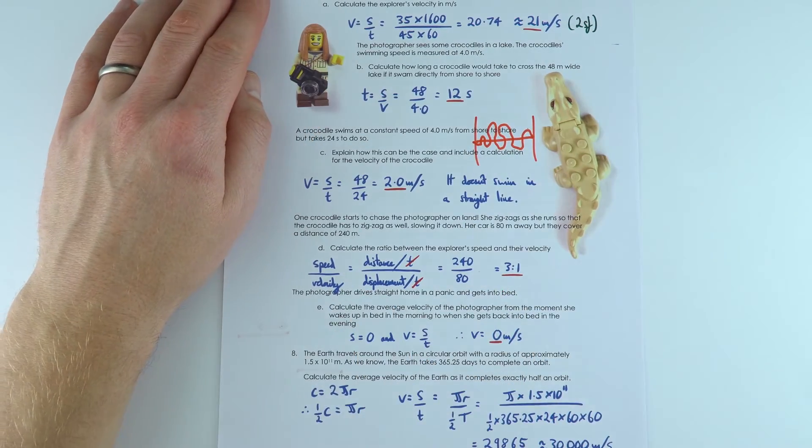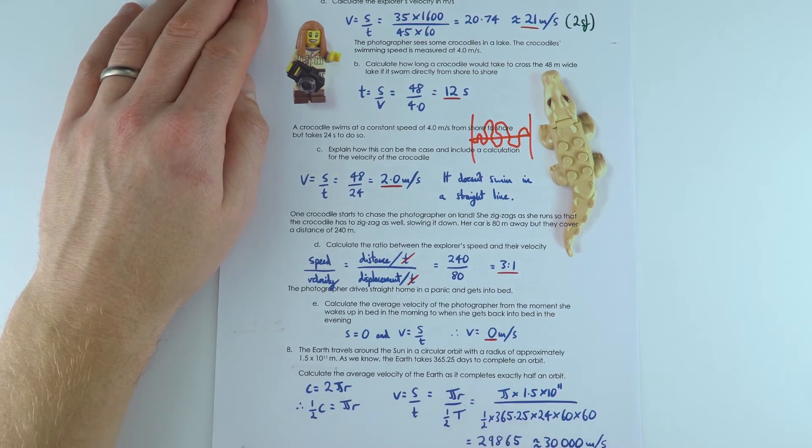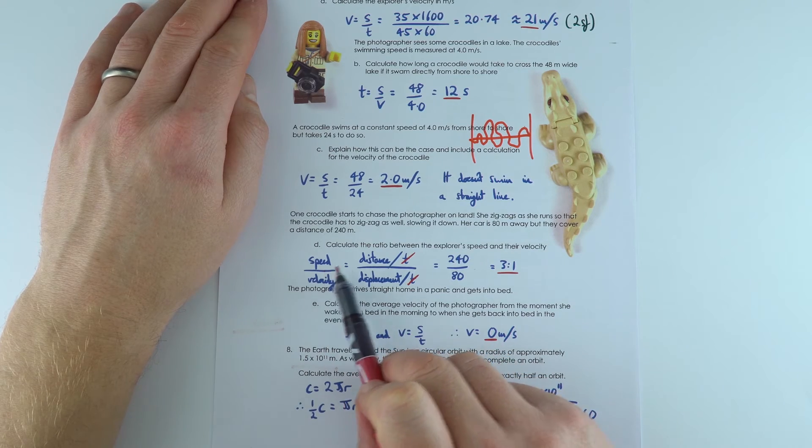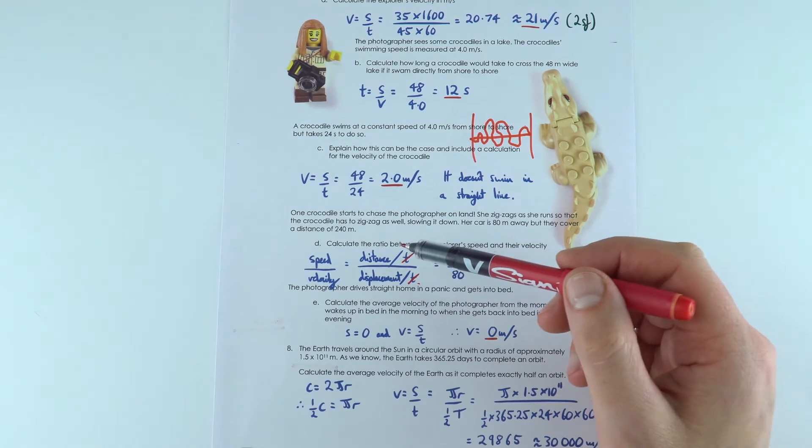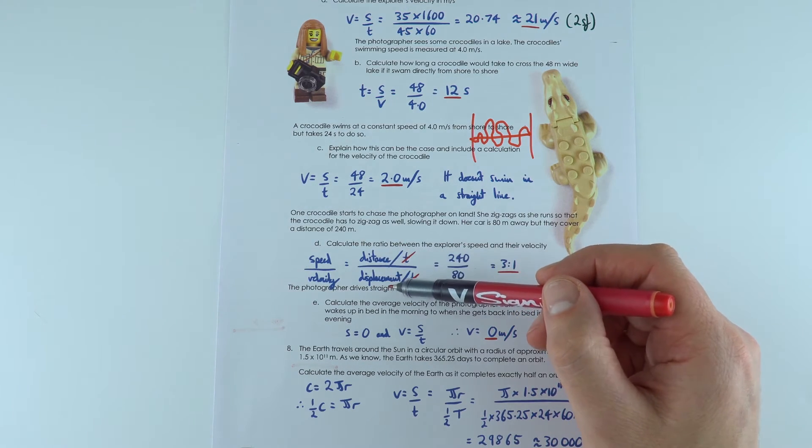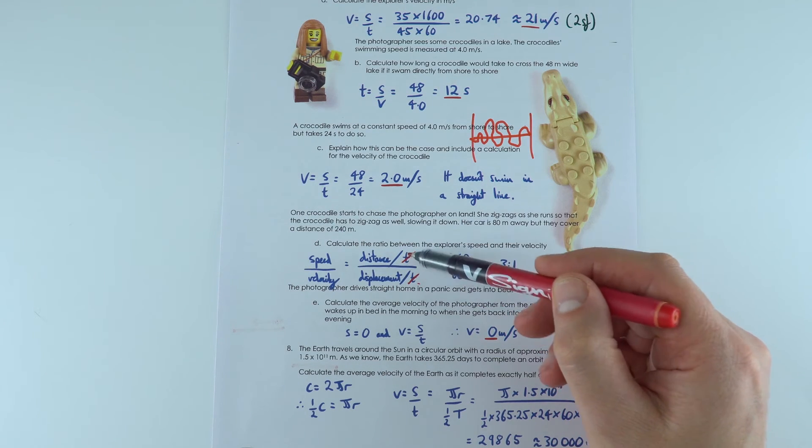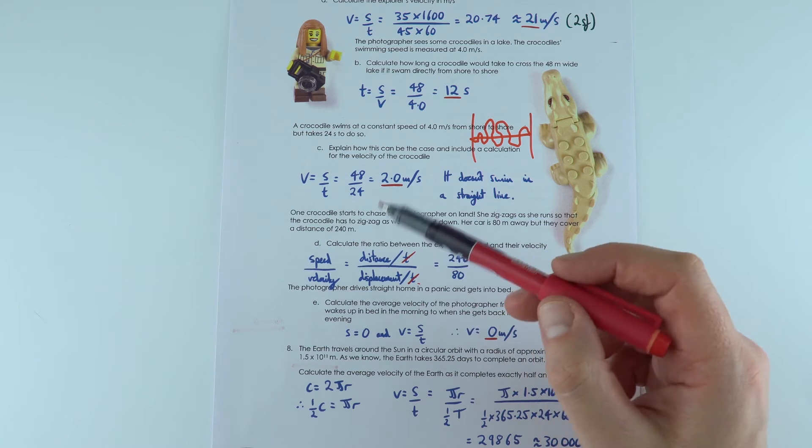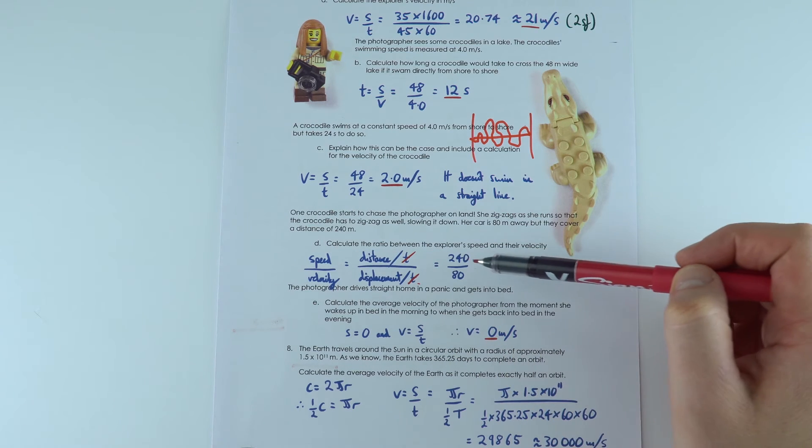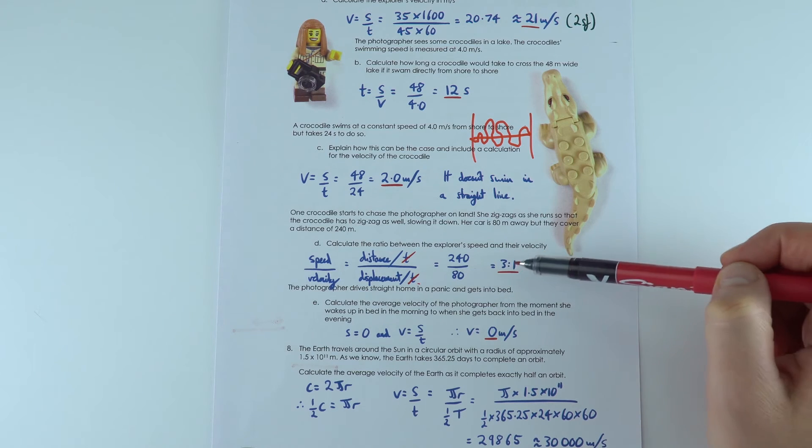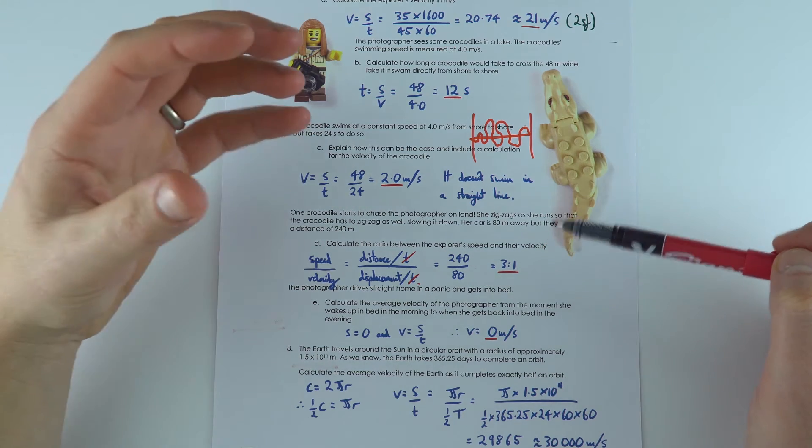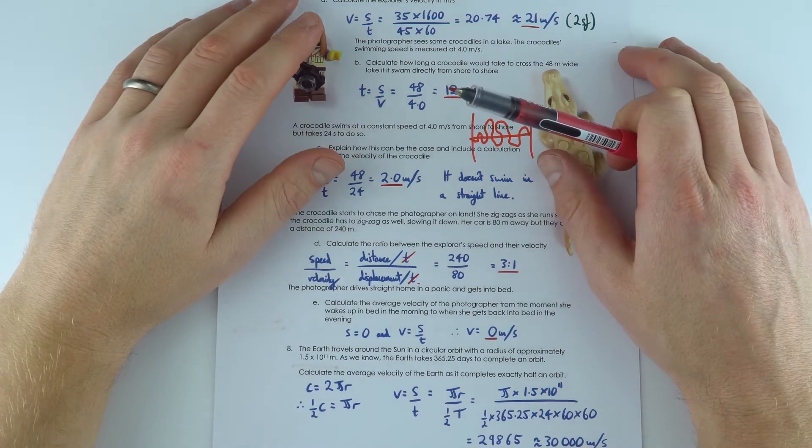Also confusing is this one here about ratios. So the ratio of speeds, because speed is distance over time and velocity is displacement over time, if we know the ratio of their distances to the displacement, the time is going to be the same value. And therefore, to find the ratio of speed to velocity, we do 240, the distance, divided by the displacement of 80, to get a ratio of 3 to 1. So the speed is three times bigger than their velocity.